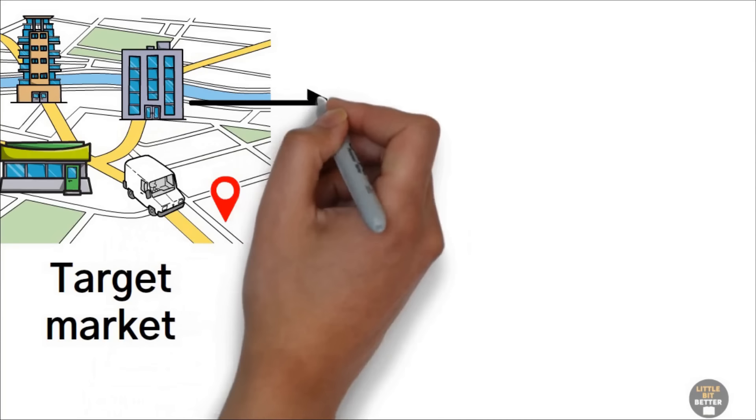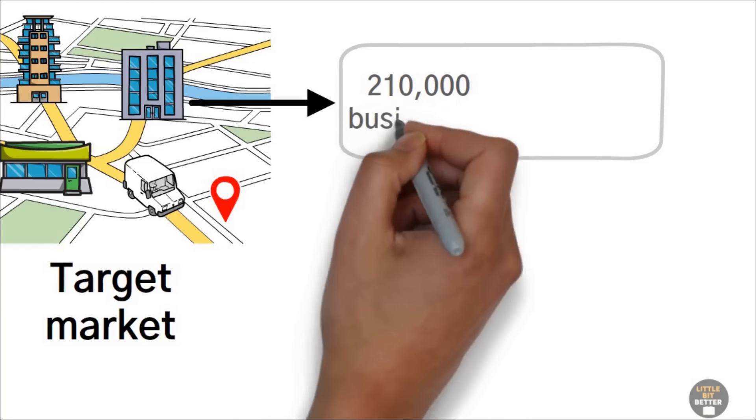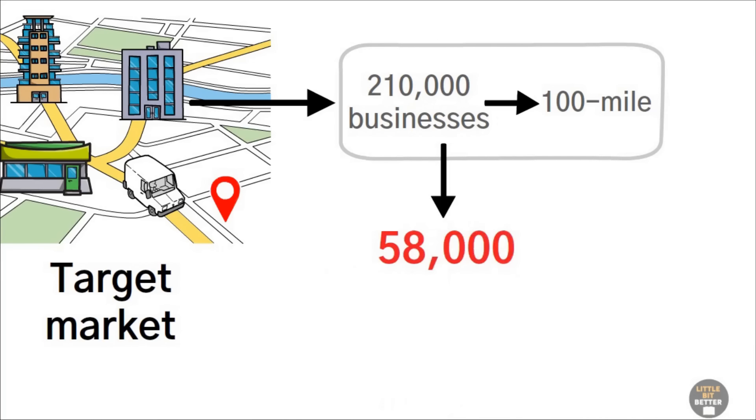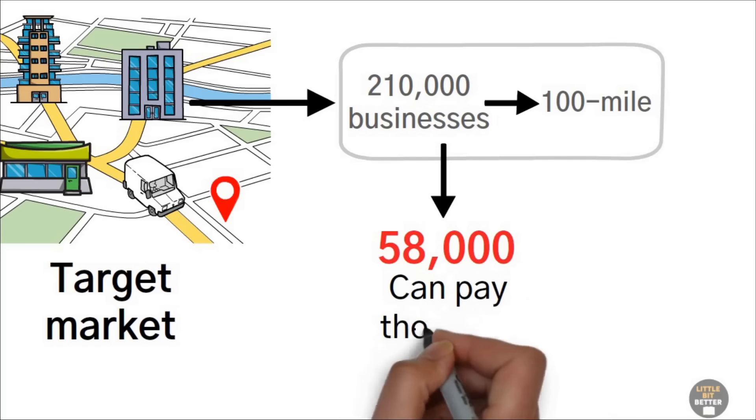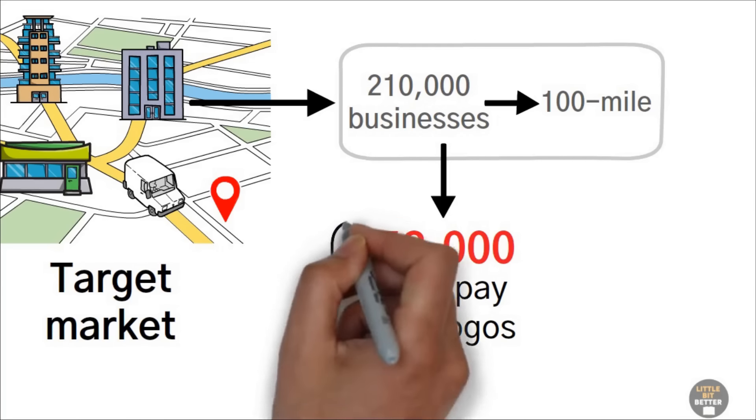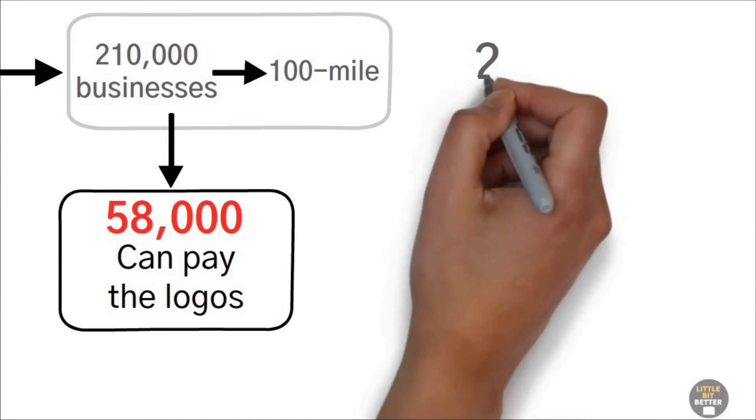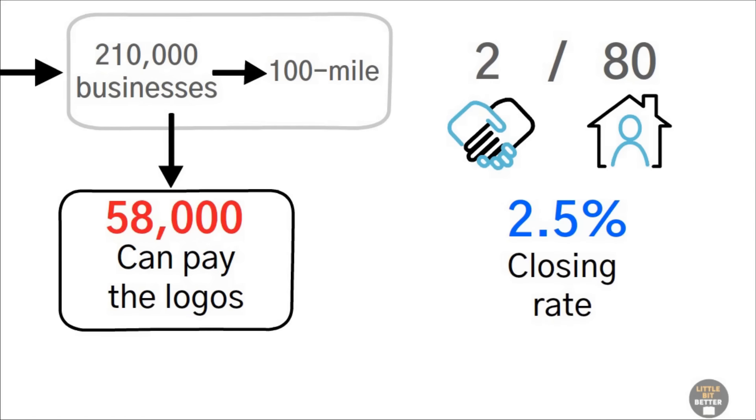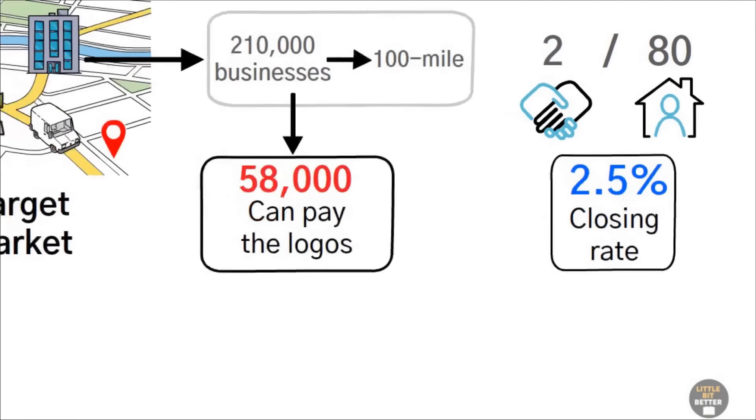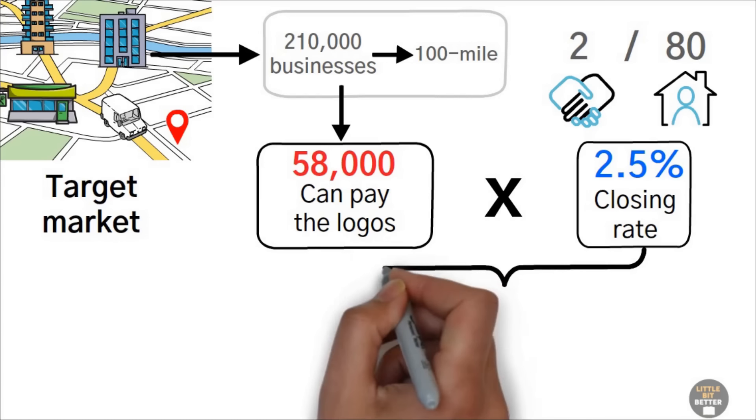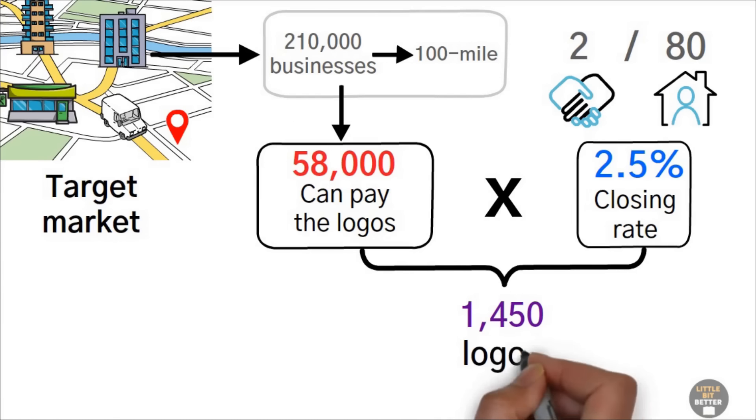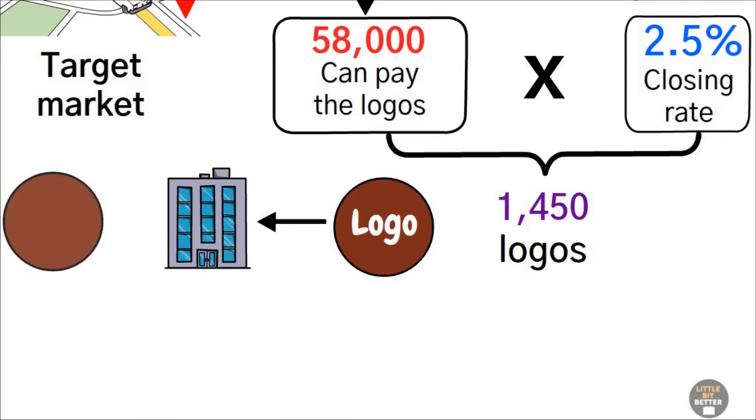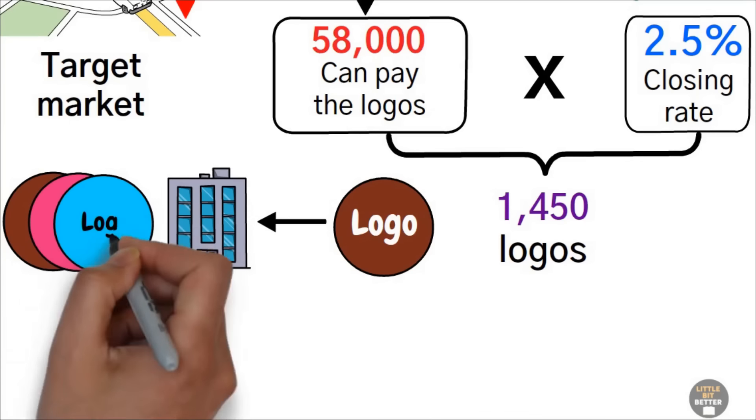Ted did a little research online and discovered there were 210,000 businesses within a 100-mile radius. He figured that about 58,000 of them earned enough to afford Alex's $10,000 logos. Until now, Alex had closed two out of the 80 prospects he'd contacted. This represented a 2.5 closing rate. With a closing rate of 2.5% and a market potential of 58,000, he could sell 1,450 logos, assuming one logo per company, which is conservative, given that most companies create logos for new divisions and products regularly.